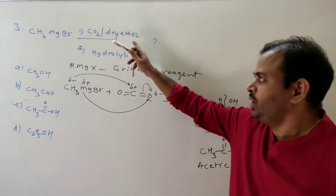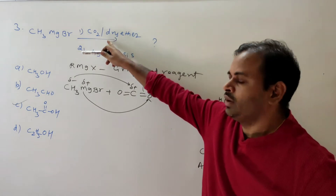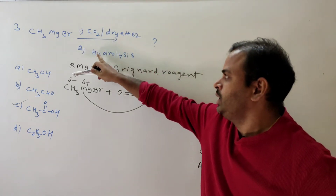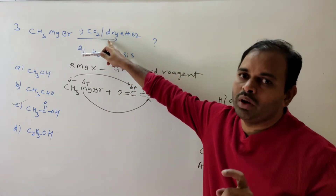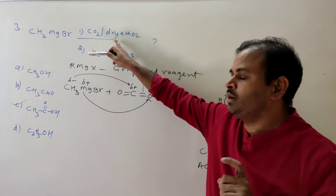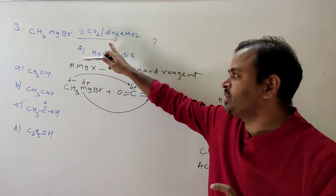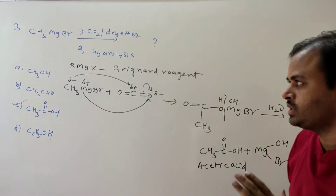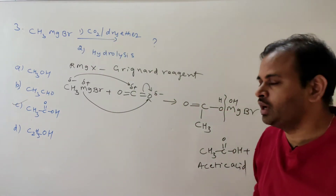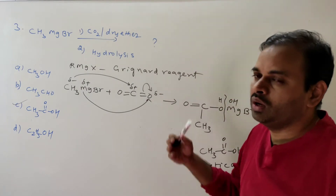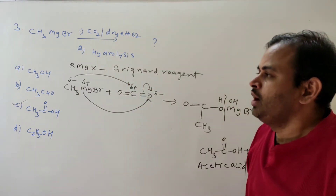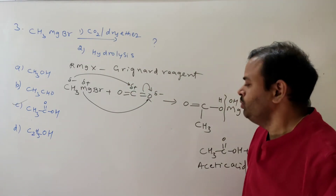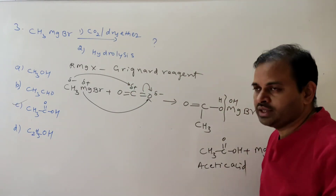How can you prepare acetic acid from methyl magnesium bromide? The reagents needed are CO2 (carbon dioxide) in presence of dry ether, followed by hydrolysis. These reaction conditions convert alkyl magnesium halide to carboxylic acid.